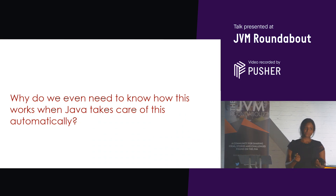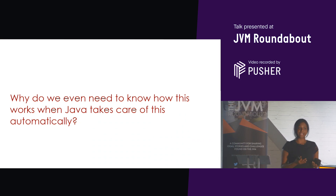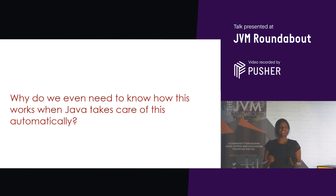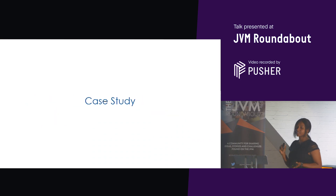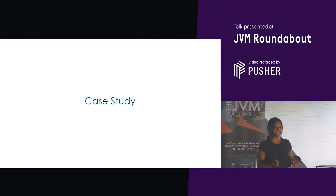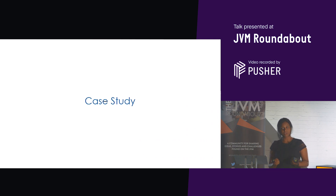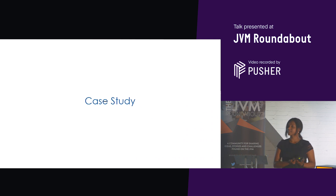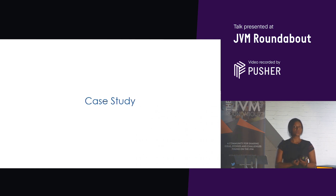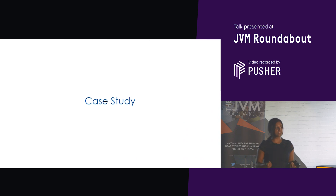We all know Java handles memory management automatically. Then why do we even need to understand how this works? This is probably where the case study will come in handy. A few years ago, I worked on an application — it was a Java service written in Java 8. It was a very simple service, not doing anything complex. Then we started to see a hit in latency. We were seeing some issues, so we looked at various things to see what's going on, and one of the things I wanted to monitor was the memory.